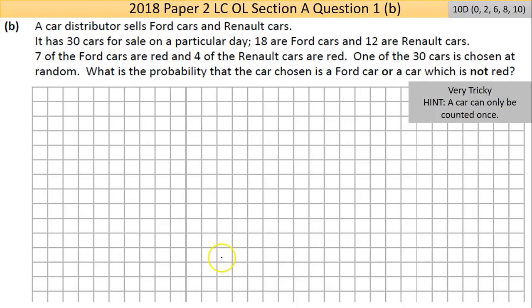Now here's part B. Now part B is, you can see here my hint. This is incredibly tricky. This got me when I first looked at the paper and got me for a long time, even when I was in the process of marking. Very, very tricky. Now it's a 10 mark question. So you're looking, hopefully, even with a tricky question, to get at least the two marks. And the hint here would be a car can only be counted once. So that's a very specific scenario in probability where something is not mutually exclusive. There is overlap is what we'd often say. A car distributor sells Ford cars and Renault cars. It has 30 cars for sale on a particular day.